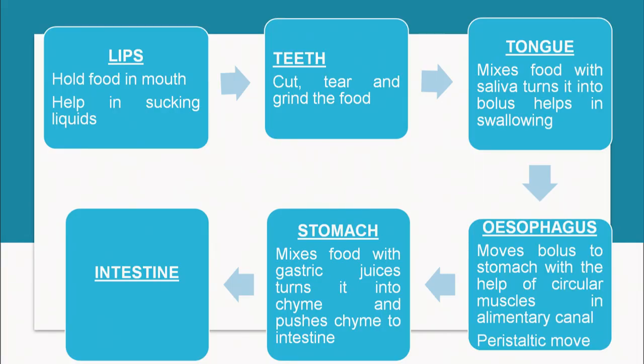Let us talk about the mechanical process first. Lips hold the food in the mouth and help in sucking liquids. Teeth cut, tear, and grind the food. Then comes the tongue — it mixes the food with saliva, turns it into a bolus, and helps in the swallowing of food.